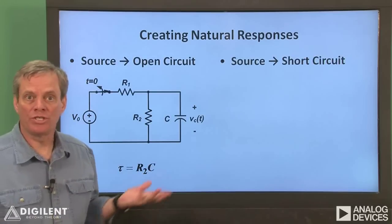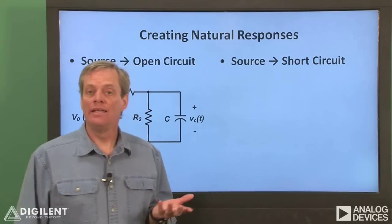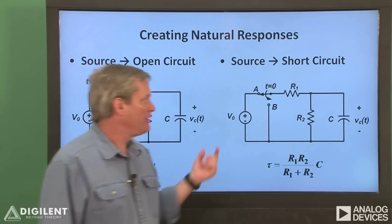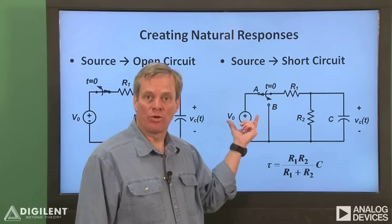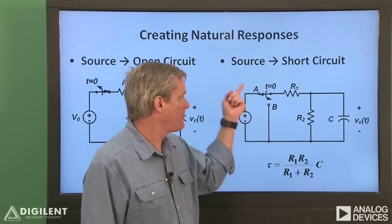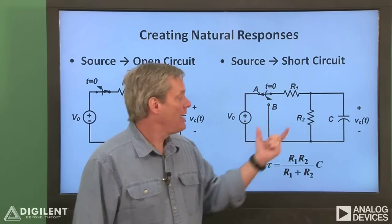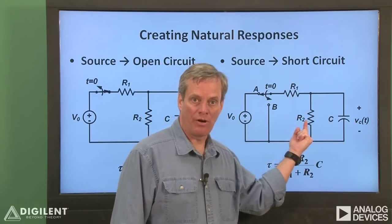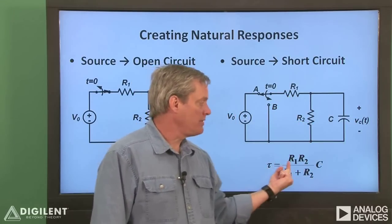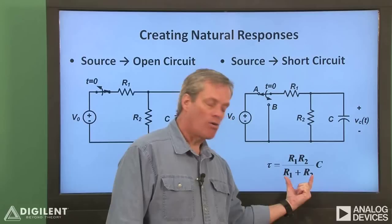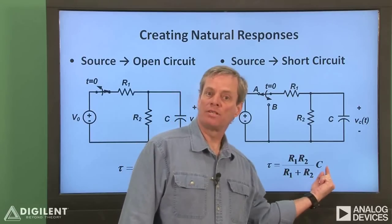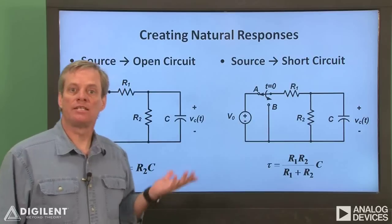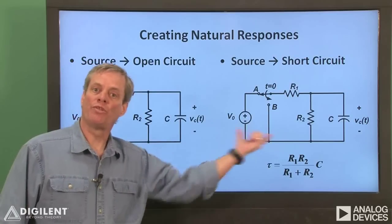An alternate approach is to turn the source off. In this case, the source behaves more like a short circuit. Using our previous example, if we turn this source off, this becomes a short circuit, and the equivalent resistance seen by the capacitor is R1 in parallel with R2. The time constant becomes R1 times R2 over R1 plus R2, all times the capacitance C. In this video, we'll create and test examples of both of these circuits.